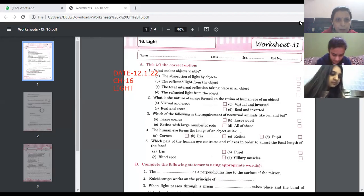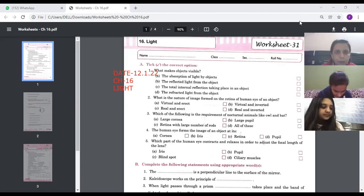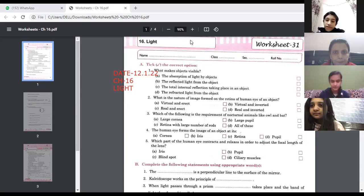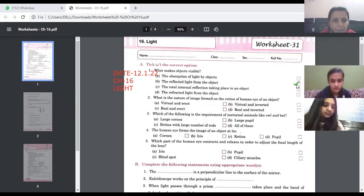Question number one is what makes objects visible? Raise hand those who know the answer. How can we see the objects? Options are: absorption of light by object, the reflected light from the object, total internal reflection. What can be the answer? Yes Samrit, you have raised hand. The reflected light from the object. Very good, second option is the correct one.